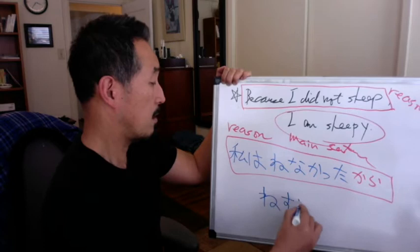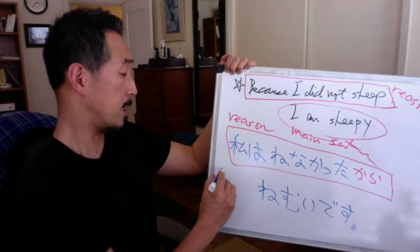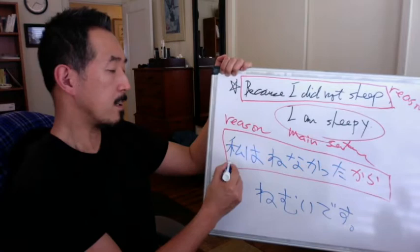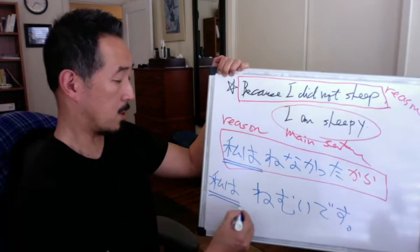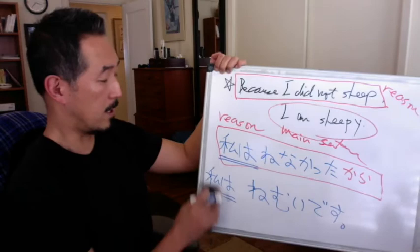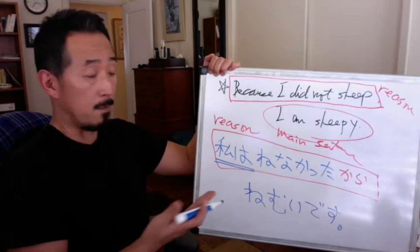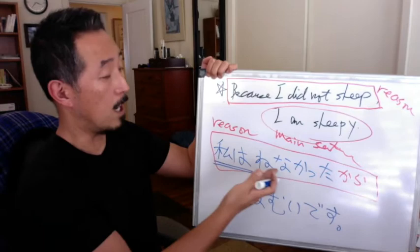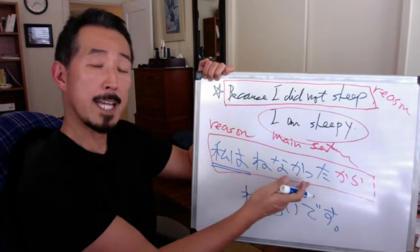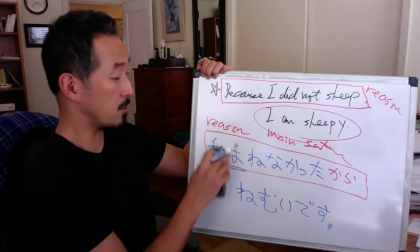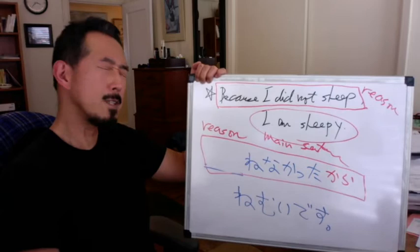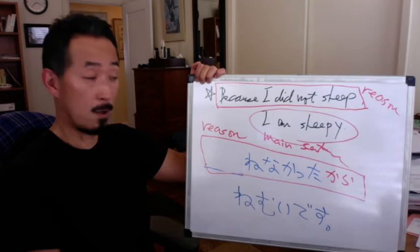私は寝なかったから — I'm sleepy — 眠いです. You may want to say 私は眠いです, but you shouldn't repeat the same subject 私は — that's redundant. So just drop it. Whenever it's obvious, I recommend you drop the subject. 私は寝なかったから 眠いです. Actually you can drop the first 私は too if it's obvious. 寝なかったから 眠いです — because I didn't sleep, I'm sleepy.